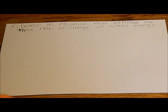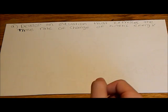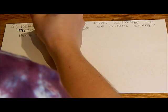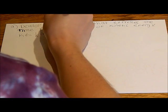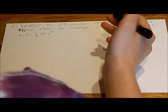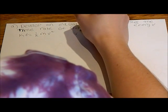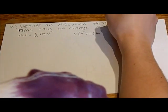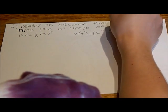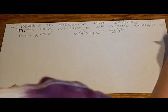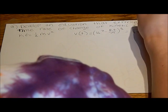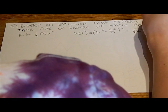Part A says: develop an equation that expresses the time rate of change of kinetic energy. Kinetic energy is equal to one-half mv squared. They gave us v as a function of time: v(t) equals v-naught squared minus rt over m to the one-half power, which is also equal to the square root of v-naught squared minus rt over m.